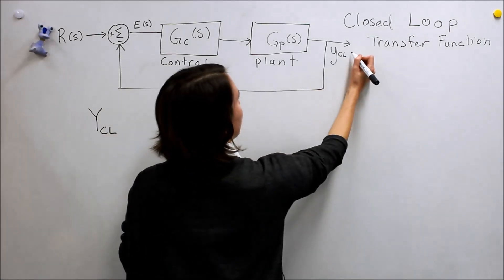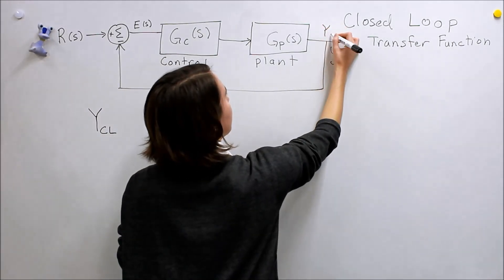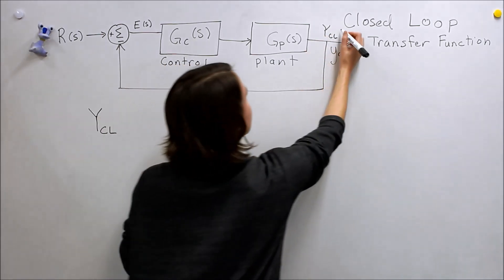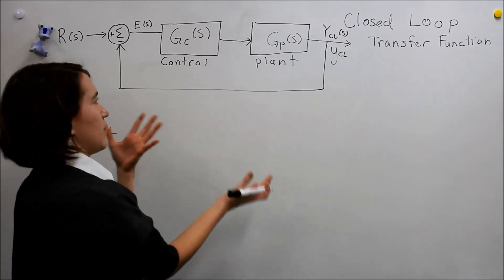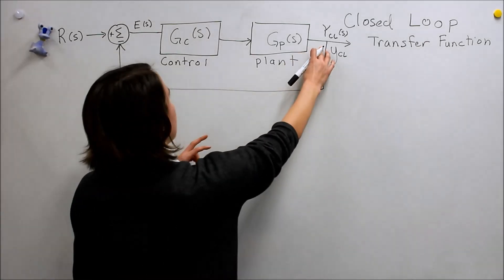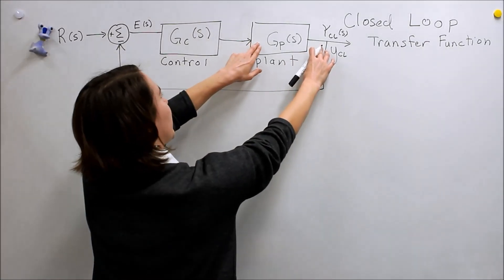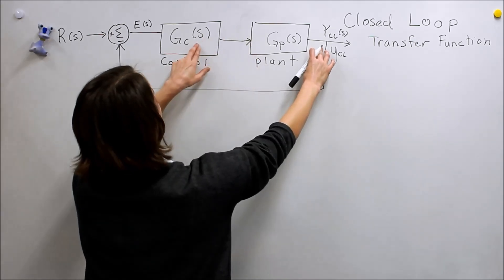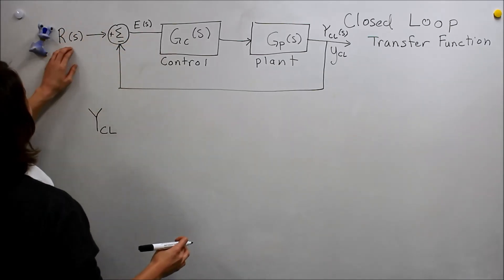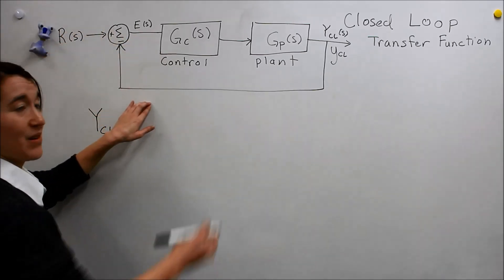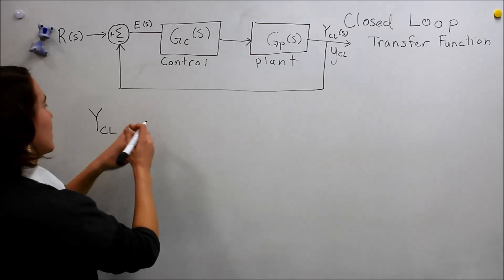This is, I guess this would be in the time domain, this is also y_cl, so of s. What is that equal to? Well, something is multiplied by g_p, something is multiplied by g_c, and then we have the error here. And the error is r(s) minus y_cl again.